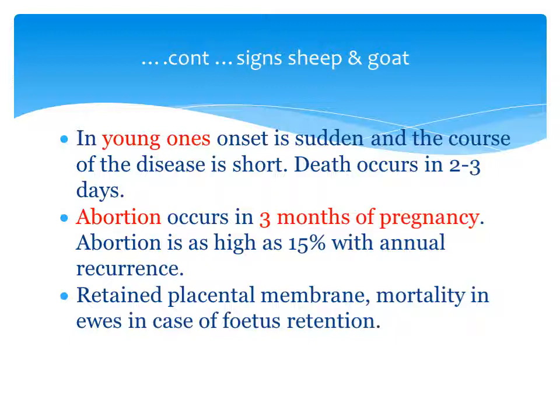The young ones are very sensitive; in them the septic form occurs, the onset of symptoms is sudden, and the course of the disease is very short. Death occurs in 2 to 3 days, so an acute form is observed in young ones. Abortion occurs at 3 months of pregnancy, and the abortion rate is as high as 15% annual recurrence in sheep and goat. There is retention of placenta, and mortality in ewes in cases of retained fetuses is observed.